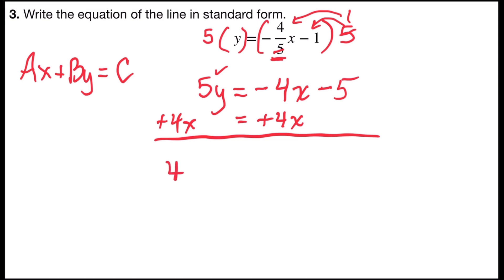So on the left side, I would have four x plus five y. On the right side, negative four x plus four x is zero. And zero plus negative five is negative five. Now I have integers for all of my coefficients and my constant, and my a term is positive. And so, in standard form, the equation would say four x plus five y equals negative five.